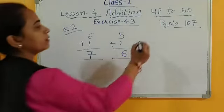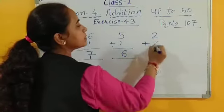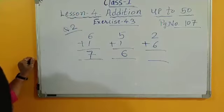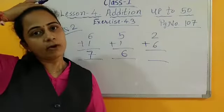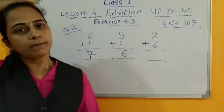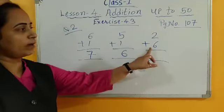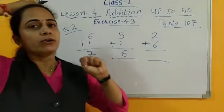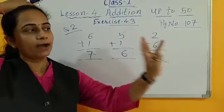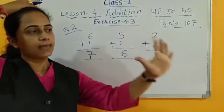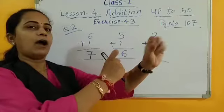Now next 2 plus 6. So again 2, fix in your mind. 2, keep it in your mind. And after 2, how many number add? 6. So after 2 count. 3, 4, 5, 6, 7, 8.